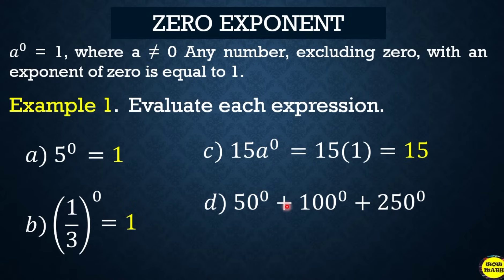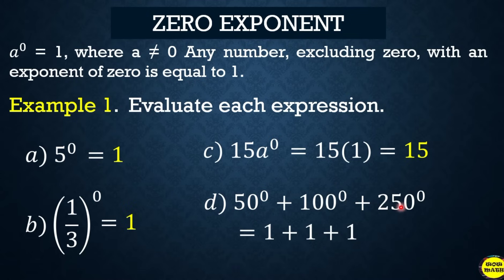Another example: 15 raised to zero plus 100 raised to zero plus 250 raised to zero. Each term raised to zero equals 1, so we have 1 plus 1 plus 1, which equals 3.